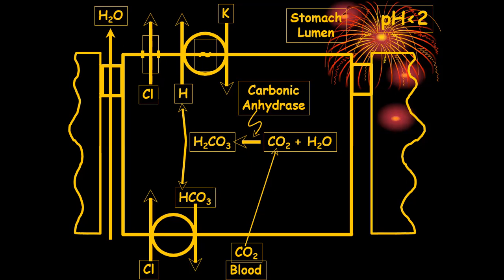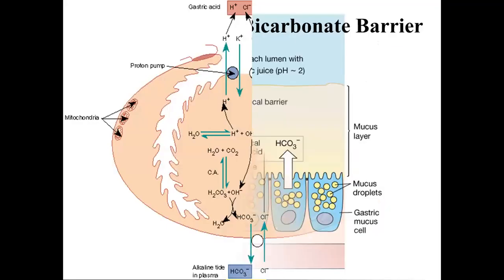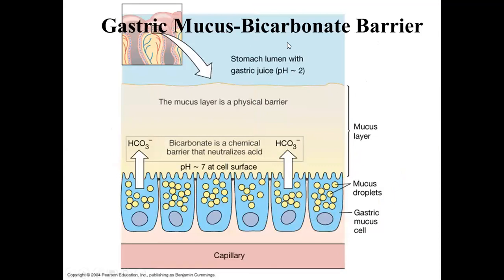The mucosal cells maintain a pH around 7 to 7.4 because mucus covers the mucosal cells and bicarbonates neutralize the acids. There are two layers of protection: the first is a physical mucus layer that provides a physical barrier protecting cells from hydrochloric acid; the second is a chemical barrier of bicarbonates that neutralize the acid. So the surface pH of the mucosal cells is around 7 (almost neutral), while the pH in the stomach lumen is very acidic.